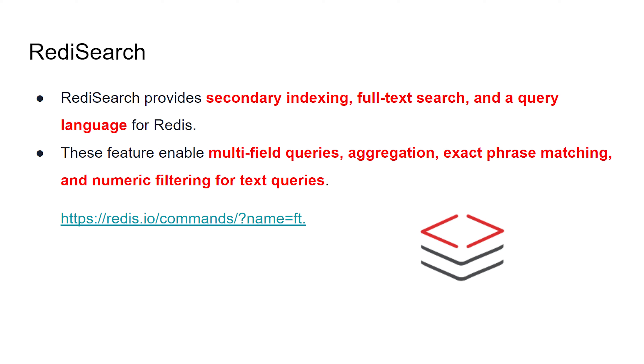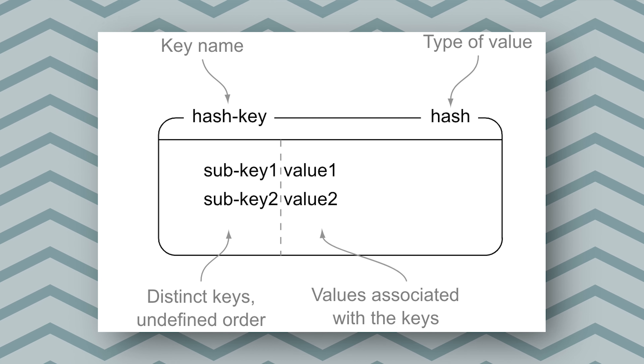Redis Search is a system that allows us to do searching of data. Redis provides different sets of data structures to store data — you can store data in hash format or JSON format. Within hashes you store key-value pairs, and within JSON you can store entire JSON objects and traverse them with different paths. Redis Search provides the functionality to search from those particular data structures.